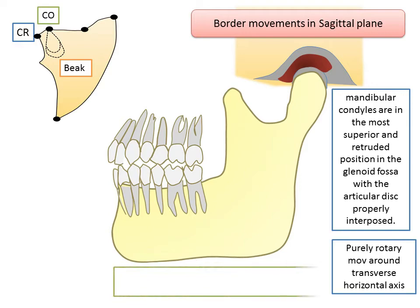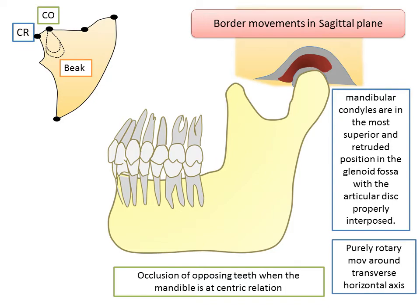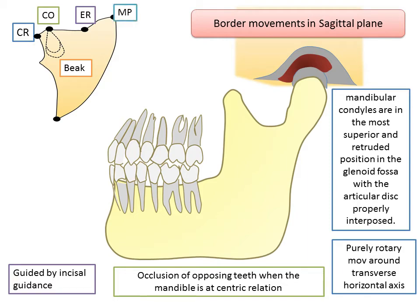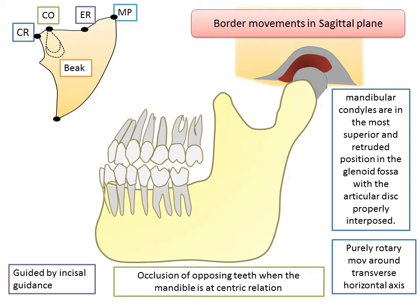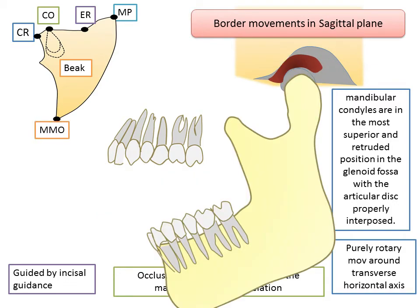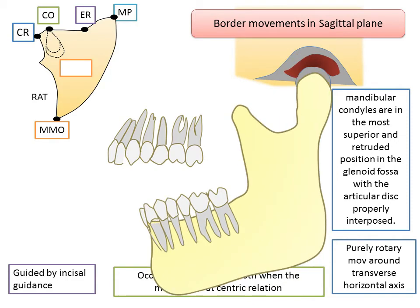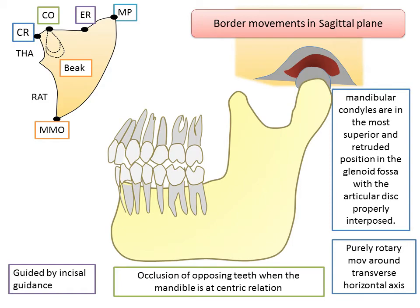From centric relation, the patient moves the mandible to centric occlusion — the occlusion of opposing teeth when the mandible is at centric relation. From that position, the patient is guided to move the mandible to an edge-to-edge relationship guided by incisal guidance, and then progresses further forward to the maximum protrusive position, then arcs downward to the maximum mouth opening position. Once this position is reached, the operator guides the mandible backward. While closing the mouth, two movements take place: the mandible arcs upward with rotation after translation around the transverse axis passing through the mandibular foramen, and then the condyle translates back to the centric relation position where the mandible continues to arc upward around the true hinge axis passing through the condyle.